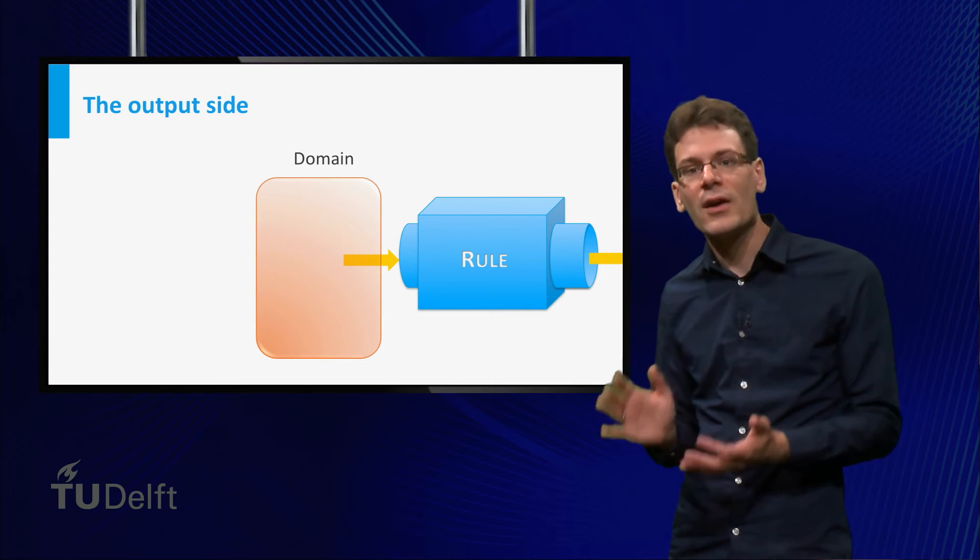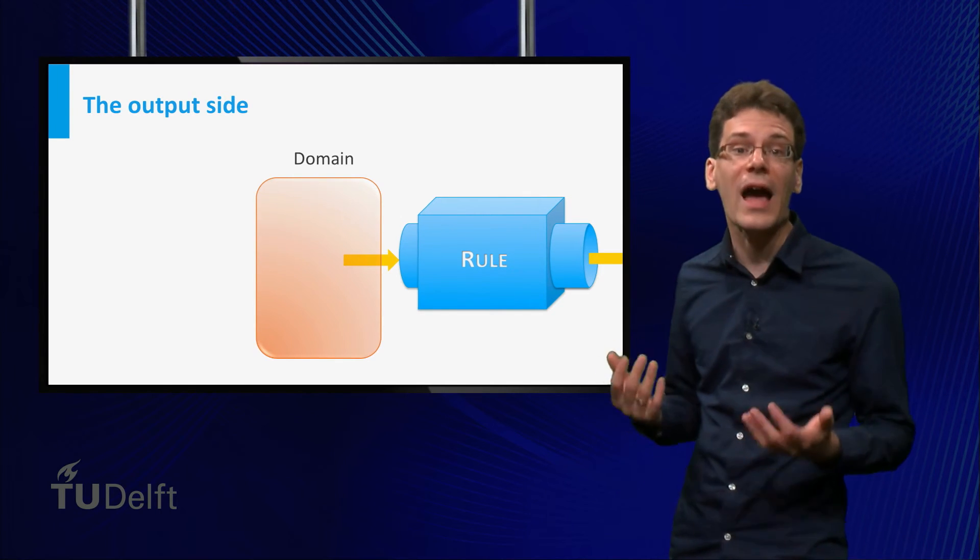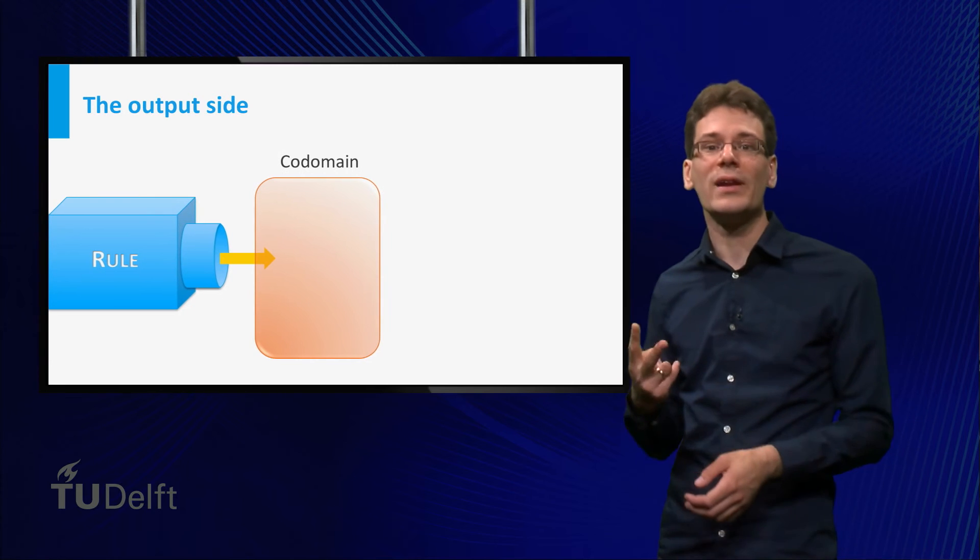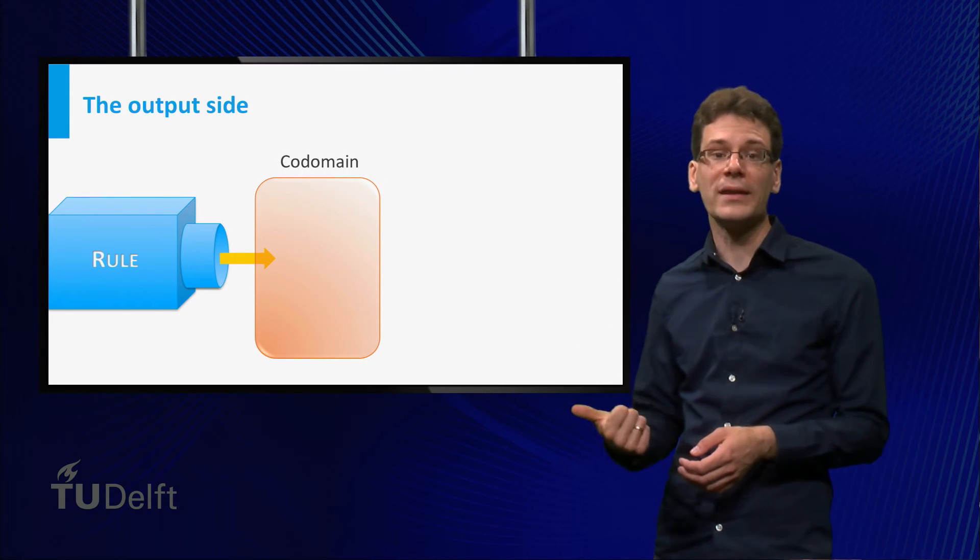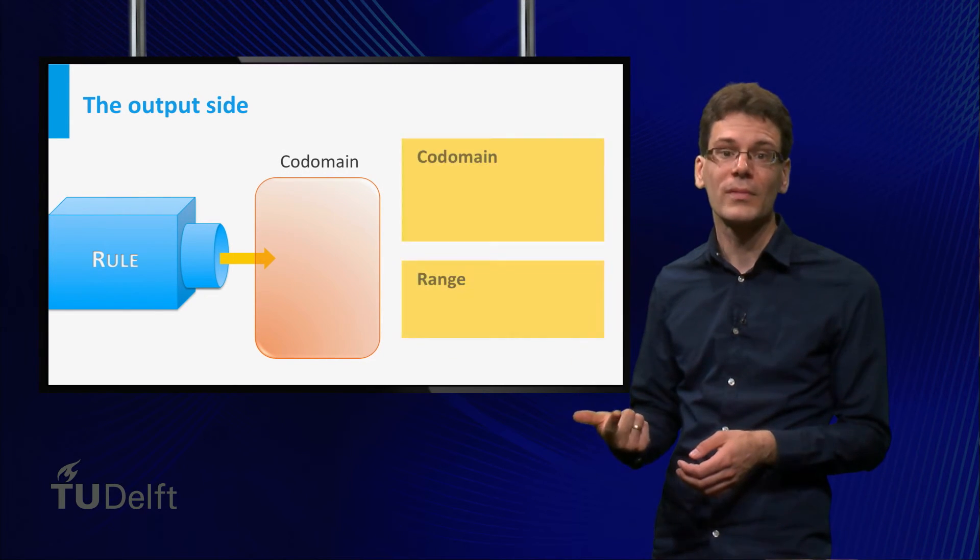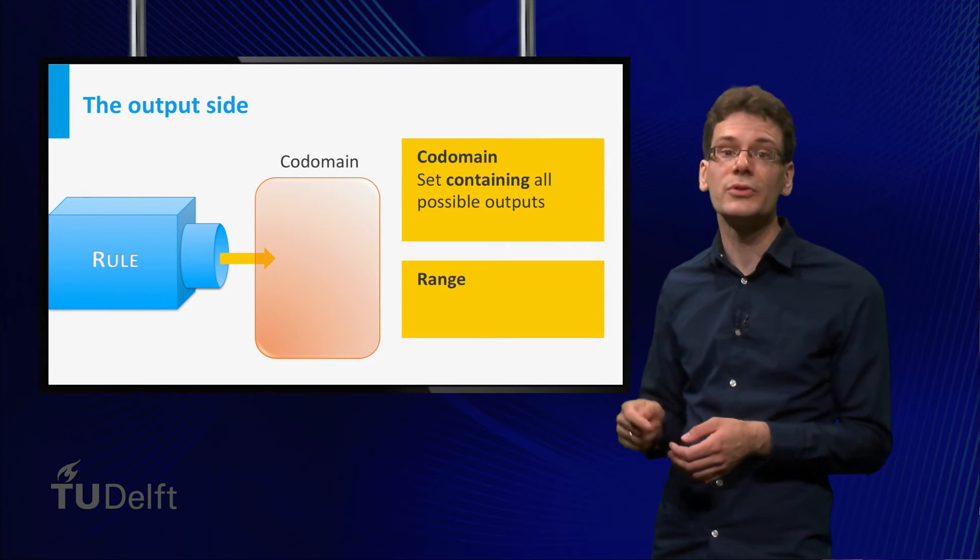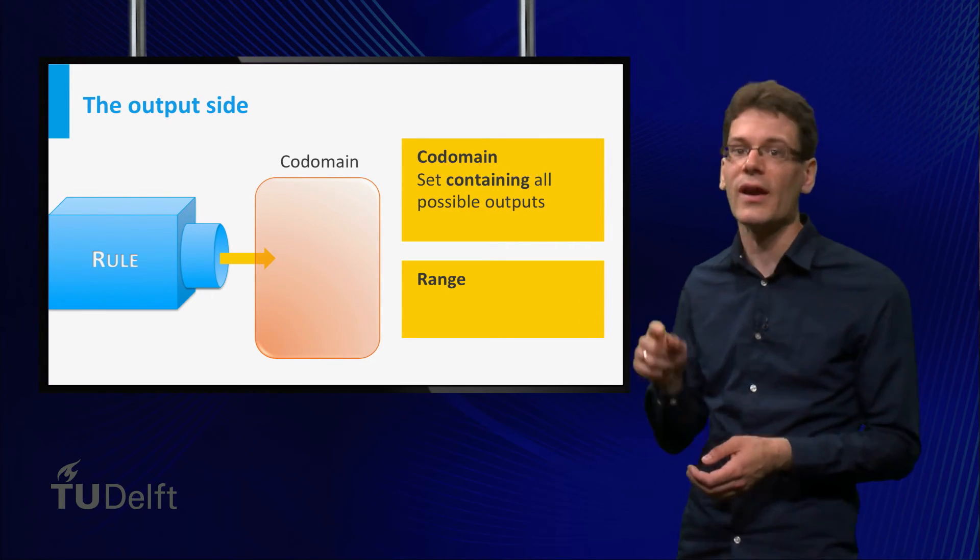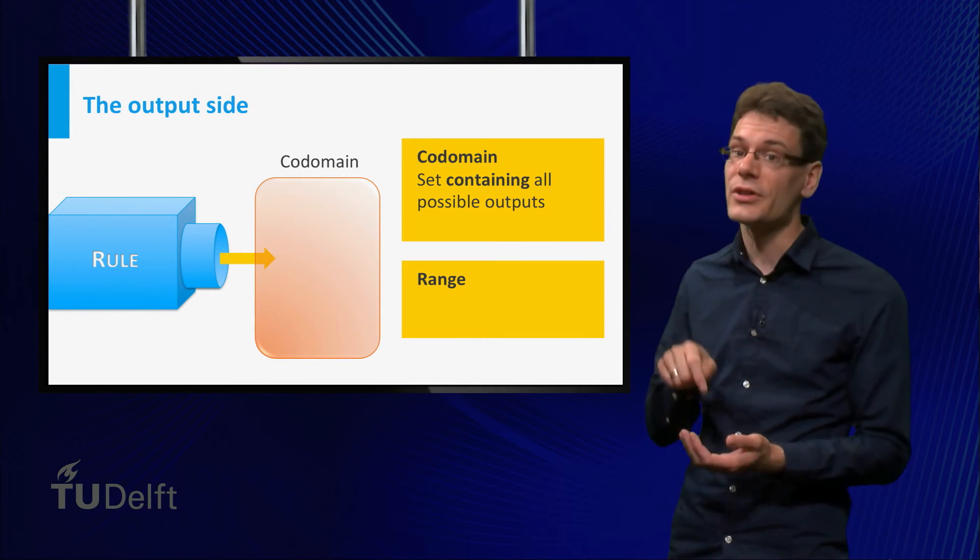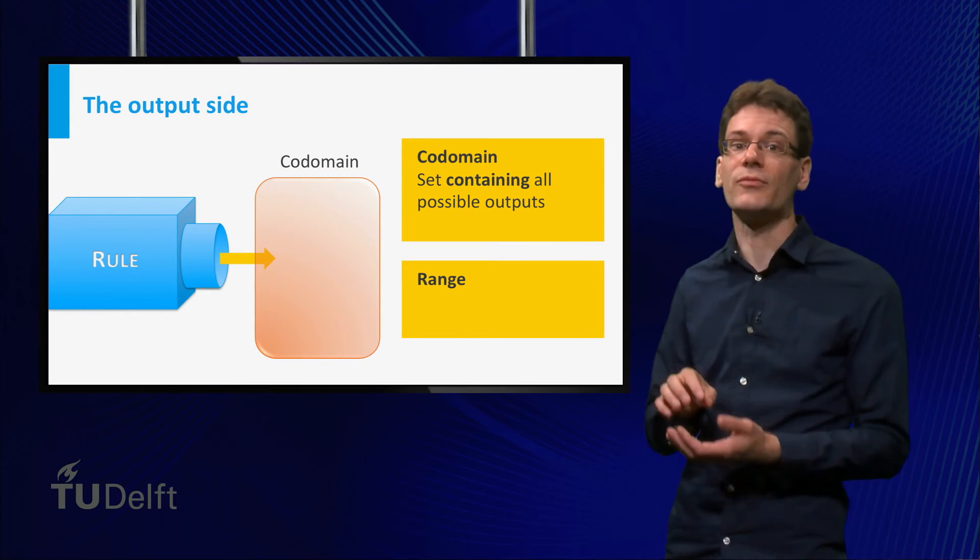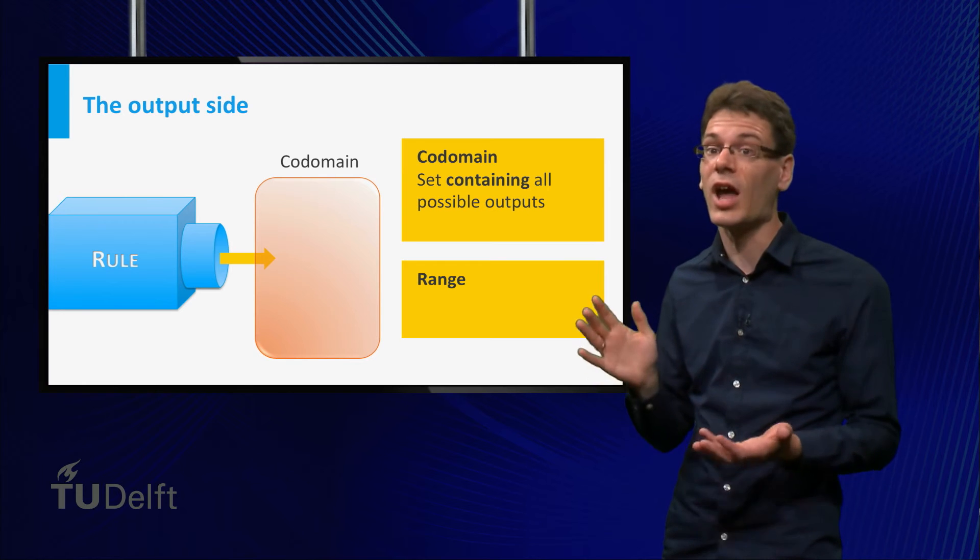Okay, enough about the input side of functions. What about the output side? There are two related concepts here: codomain and range. Remember, the codomain is a set that contains the possible outputs of the function. And let me stress here, I say contains. It does not have to be exactly equal to the set of possible outputs. You can take it larger if you like.